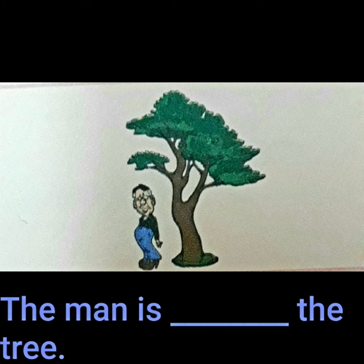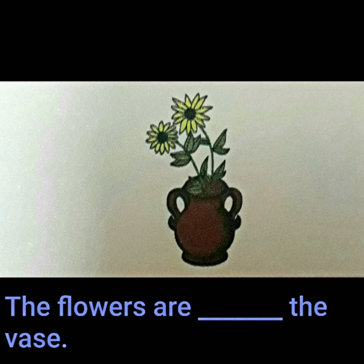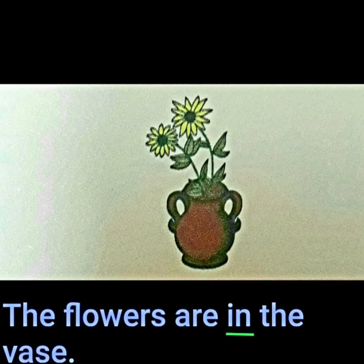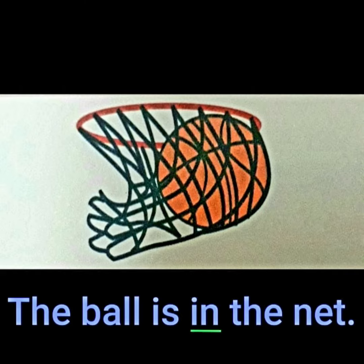The man is — the tree. The man is under the tree. The flowers are — the vase. The flowers are in the vase. The ball is — the net. The ball is in the net.